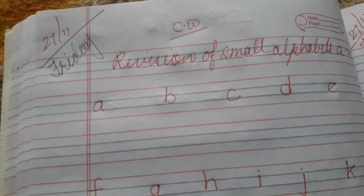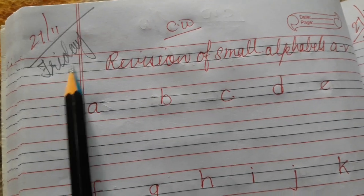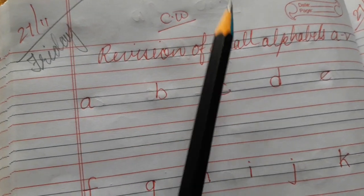Now children, take out your English notebook. Today's date is 27th November, day Friday, CW.